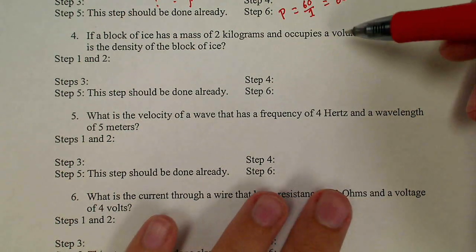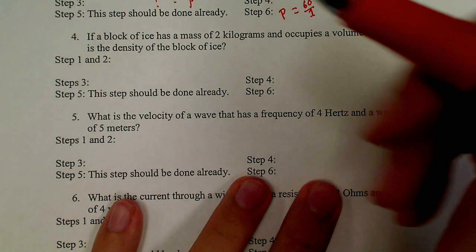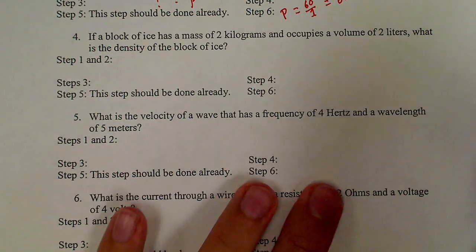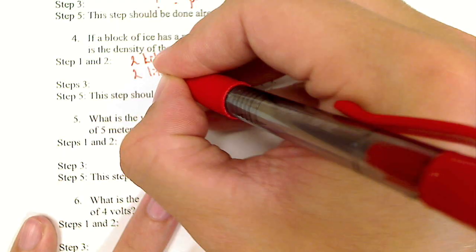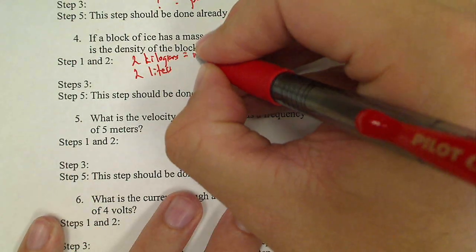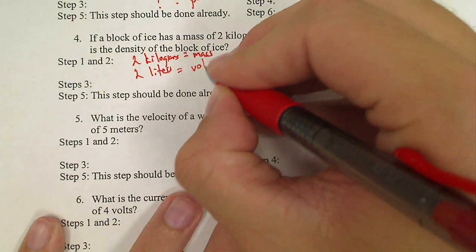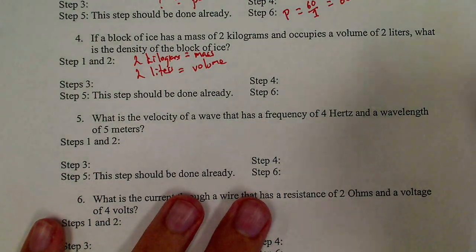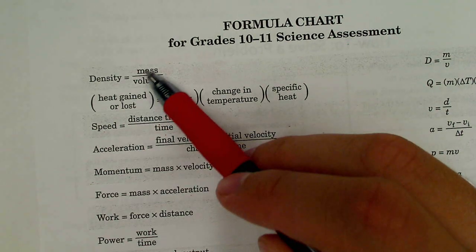Number 4. If a block of ice has a mass of 2 kilograms and occupies a volume of 2 liters, what is the density of the block of ice? Step 1, write down the numbers. 2 kilograms, 2 liters. Now identify these. A mass of 2 kilograms - kilograms measures mass. A volume of 2 liters - liters measures volume. Step 3, what are they looking for? What is the density? A formula that has density, mass, and volume in it? It's the first one on my chart. Density, mass, and volume.